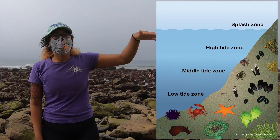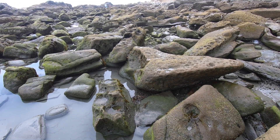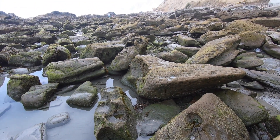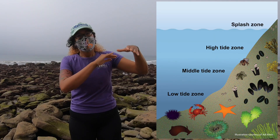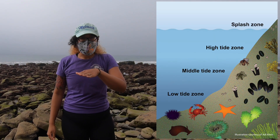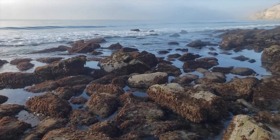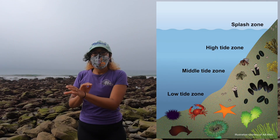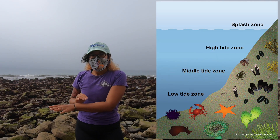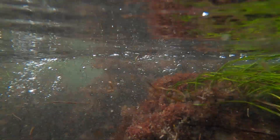Next we have the high zone. That area will be submerged by water sometimes during really high tides, but not very much. Next we have the mid zone or the median zone, which will be submerged by water about half of the time. Next we have the low zone. The low zone is going to be exposed or submerged underwater for most of the time and usually doesn't get very dry.